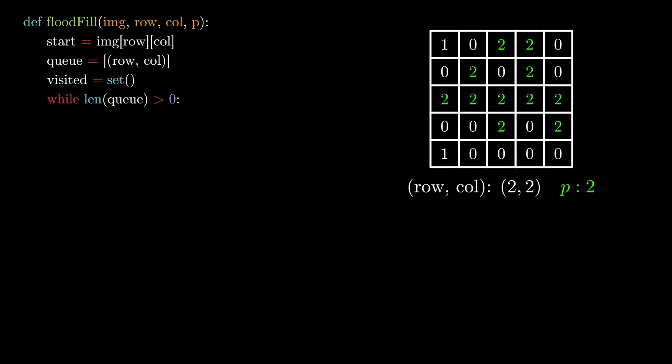While the queue is not empty, we remove the first element of the queue and mark it by adding it to the set of visited locations. We then transform the pixel from the old value to the new value.